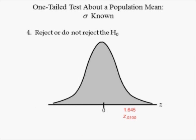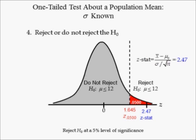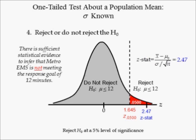In step 4 we determine whether the null hypothesis is rejected or not. Since the critical value is 1.645, we plot it on the number line. This value defines the reject and do not reject the null hypothesis regions. The area to the right of this line is equal to the significance level of 0.0500. Since the sample data yielded a z-stat equal to 2.47, it is plotted on the number line right of critical value 1.645. Hence, we reject the null hypothesis at a 5% level of significance since the z-stat is greater than or equal to the critical value. This means, in English, there is sufficient statistical evidence to infer that Metro EMS is not meeting the response goal of 12 minutes or less.